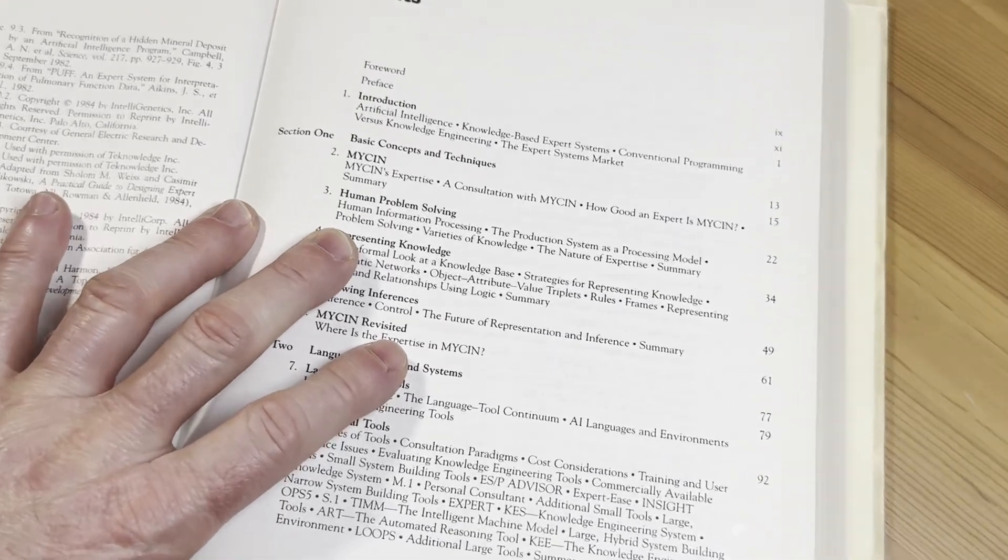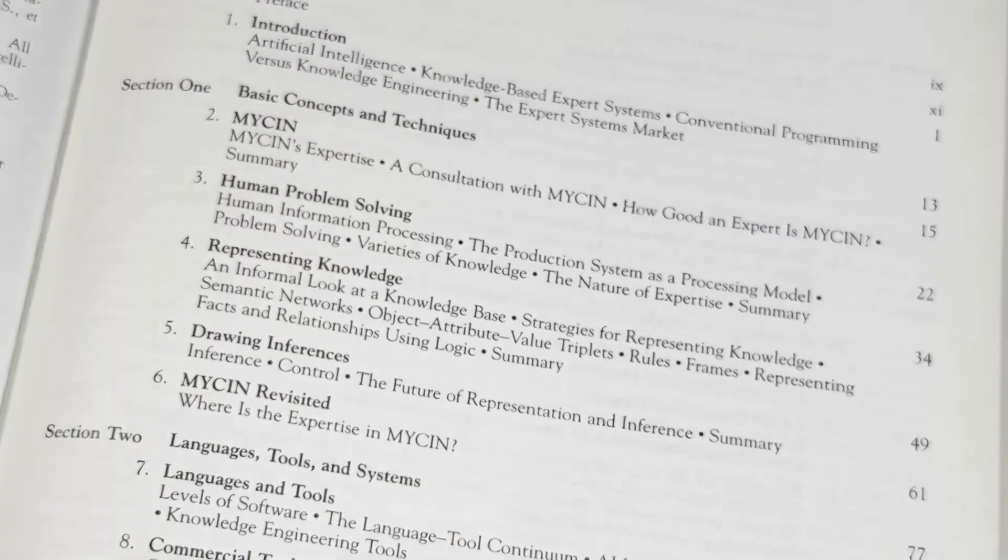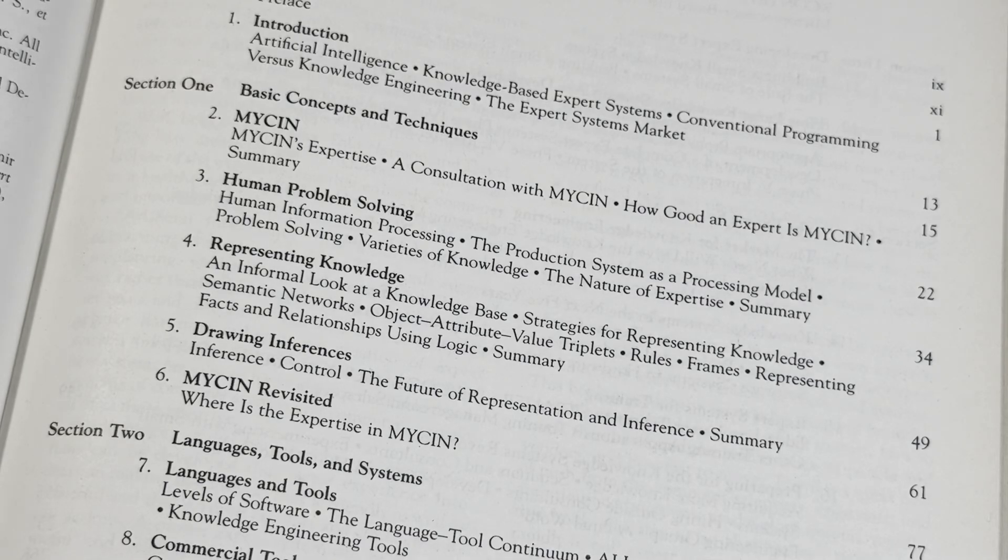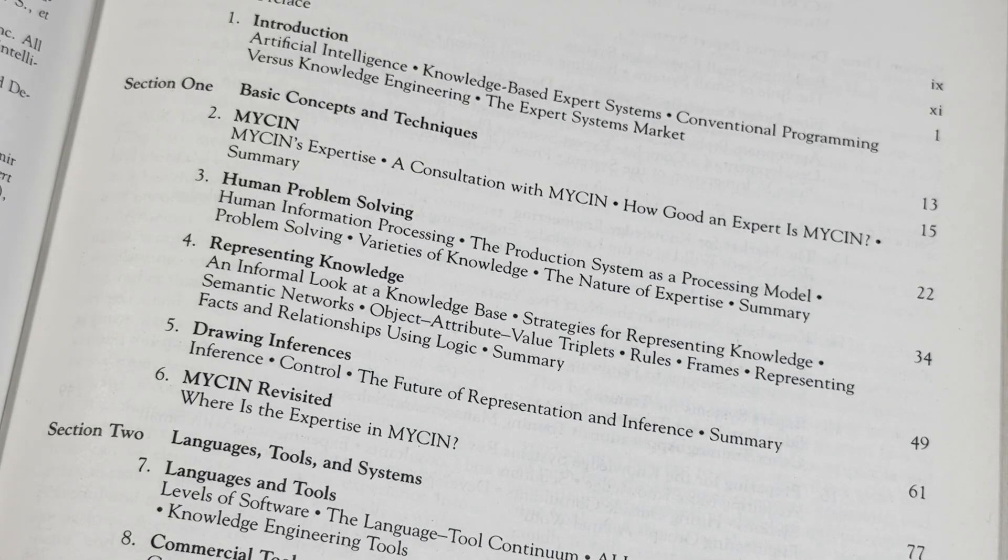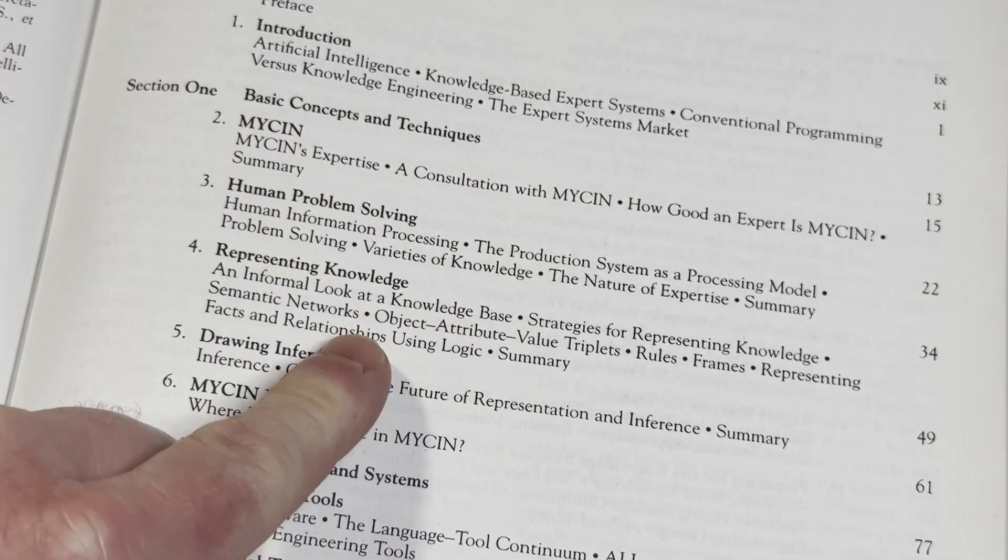Let's take a look at the content so you can see what this contains. Introductions. It talks about AI, which is Artificial Intelligence. Knowledge-based Expert Systems. Conventional Programming versus Knowledge Engineering. And then the Expert Systems Market.